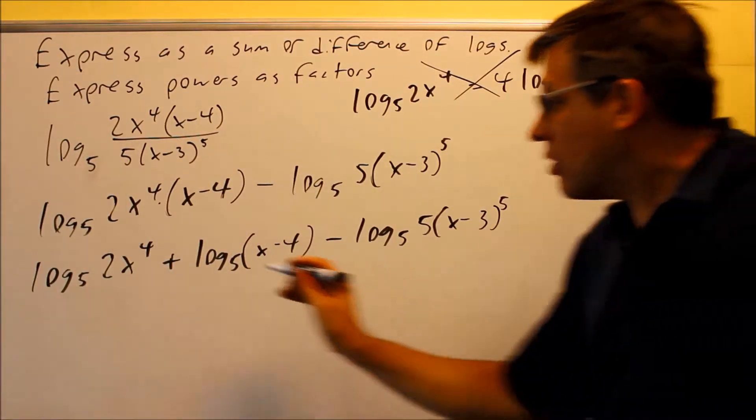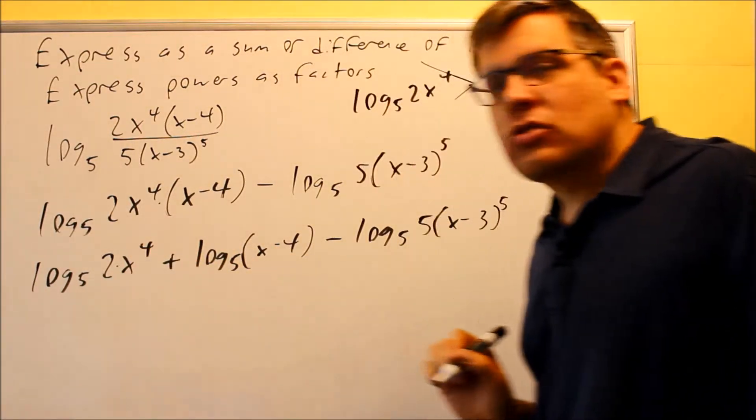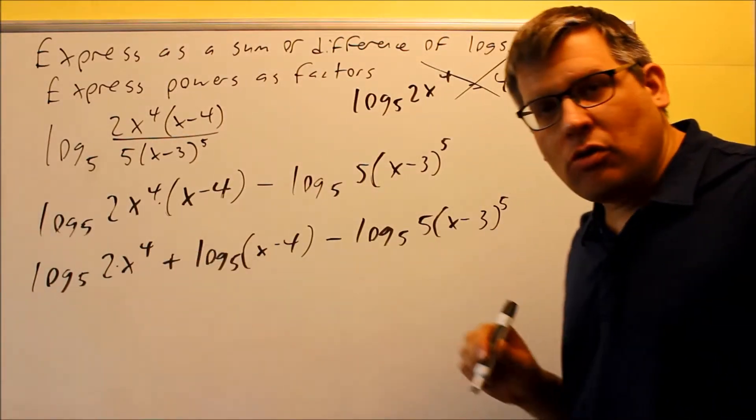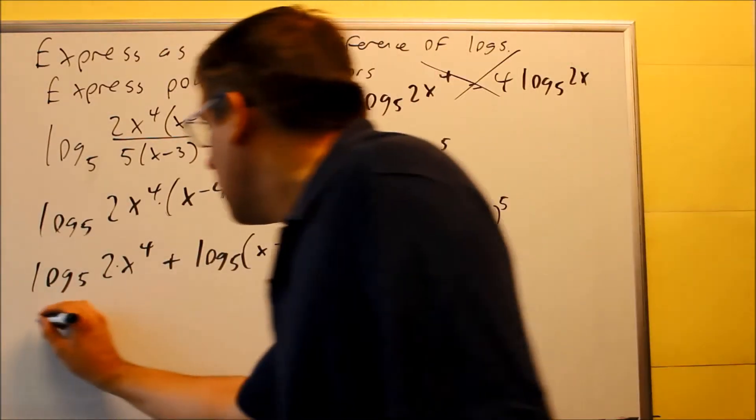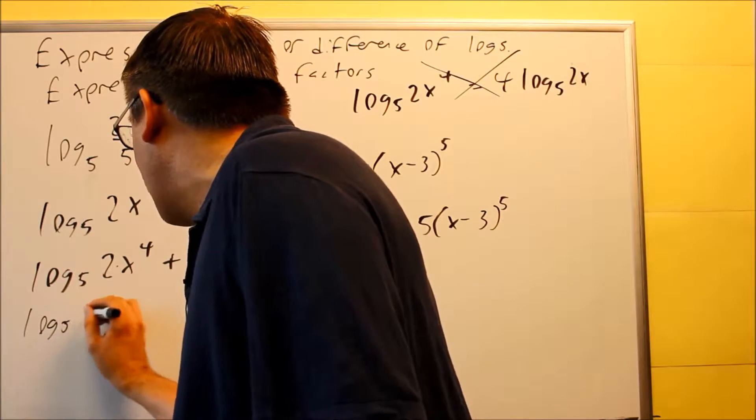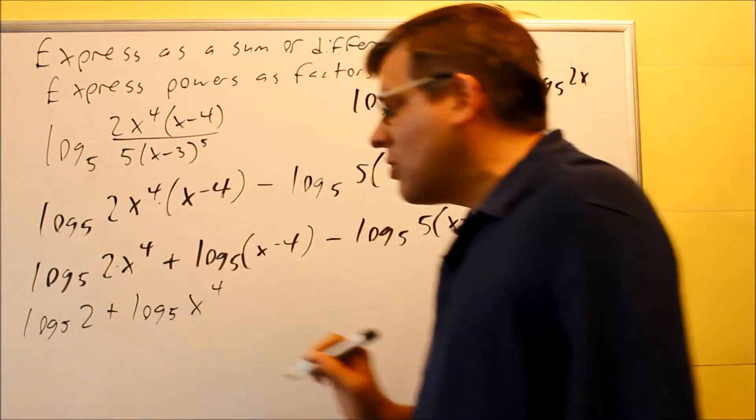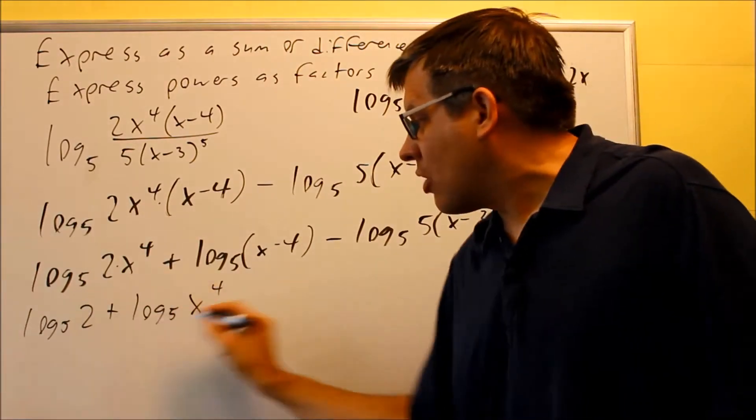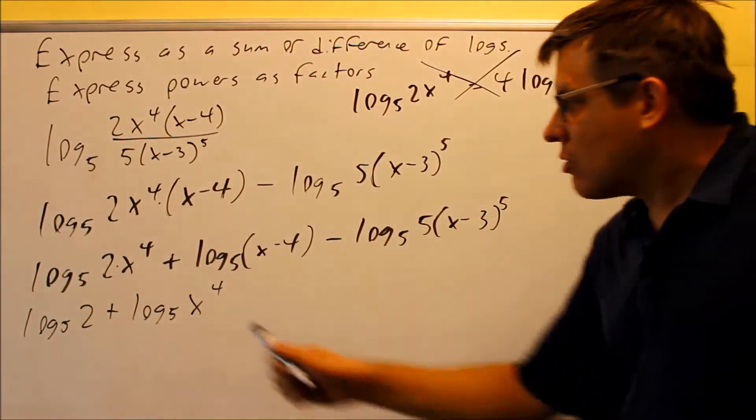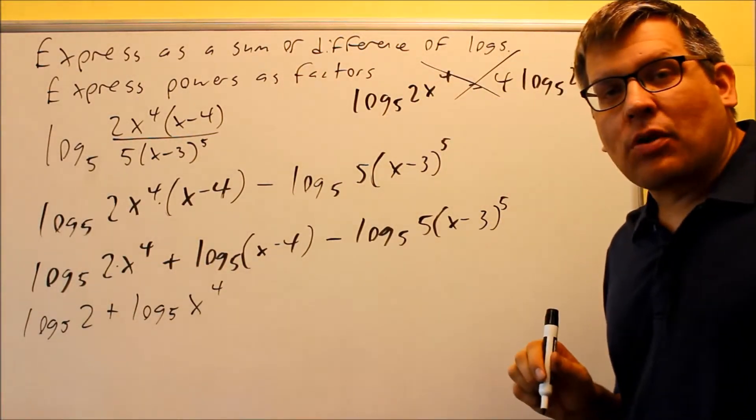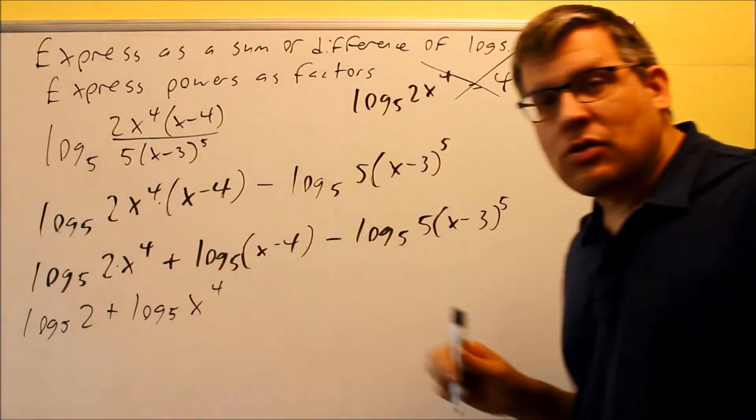What you want to do is you actually want to treat this like two separate terms. This is really 2 times x to the 4th power. So when you separate it, it's going to be log base 5 of 2, plus log base 5 of x to the 4th. That's the correct way to separate that. You're treating the number as a separate term, and now we can separate that into a plus.